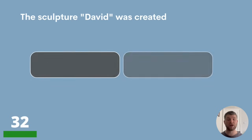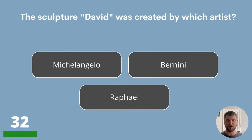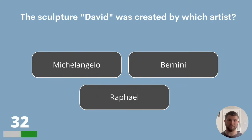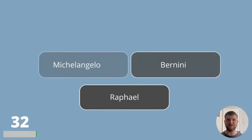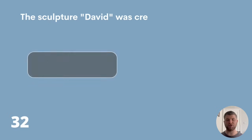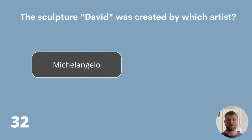Question 32. The sculpture David was created by which artist? Michelangelo, Bernini or Raphael? The sculpture David was created by Michelangelo.